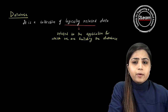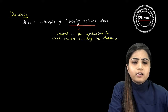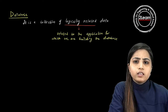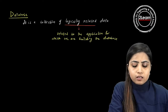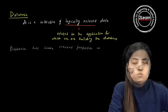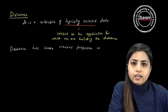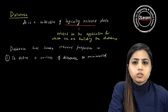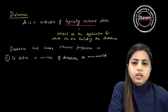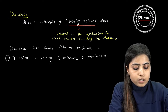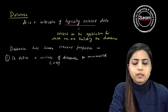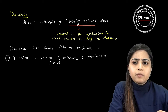A database has some inherent properties — properties that are satisfied by default. You do not need to specify them separately. Every database satisfies these properties automatically. The first property is that it defines a universe of discourse, also called the mini world. Universe of discourse, or UOD, specifies that the database gives a description of a particular mini world — a specific real-world application.